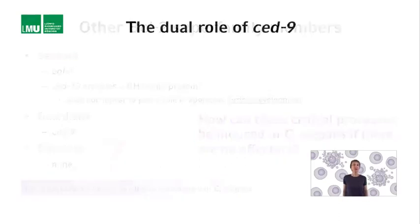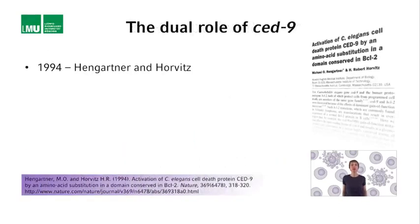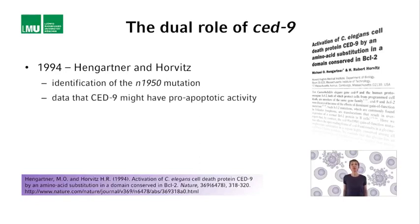In 1994, Michael Hengartner and Bob Horwitz published another paper in the journal Nature, in which they reported the identification of the N1950 gain-of-function mutation. In their publication, they also present data that SET9 might have pro-apoptotic activity in cells that are programmed to die — basically those 131 cells that are programmed to die during C. elegans development.